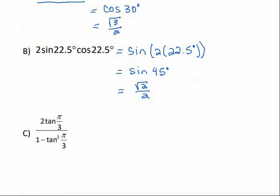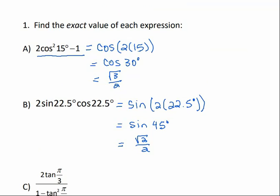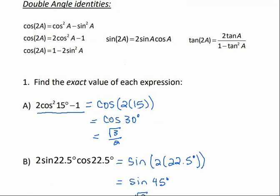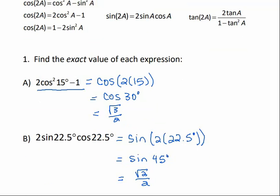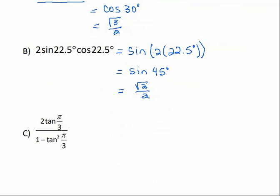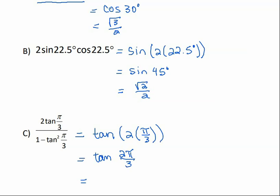For part C: 2 times the tangent of π over 3 divided by 1 minus the tangent squared of π over 3. This is the tangent double angle identity, and it equals the tangent of 2a. In this case, our a is π over 3, so this equals the tangent of 2 times π over 3, which is the tangent of 2π over 3. The tangent of 2π over 3 is negative square root of 3.